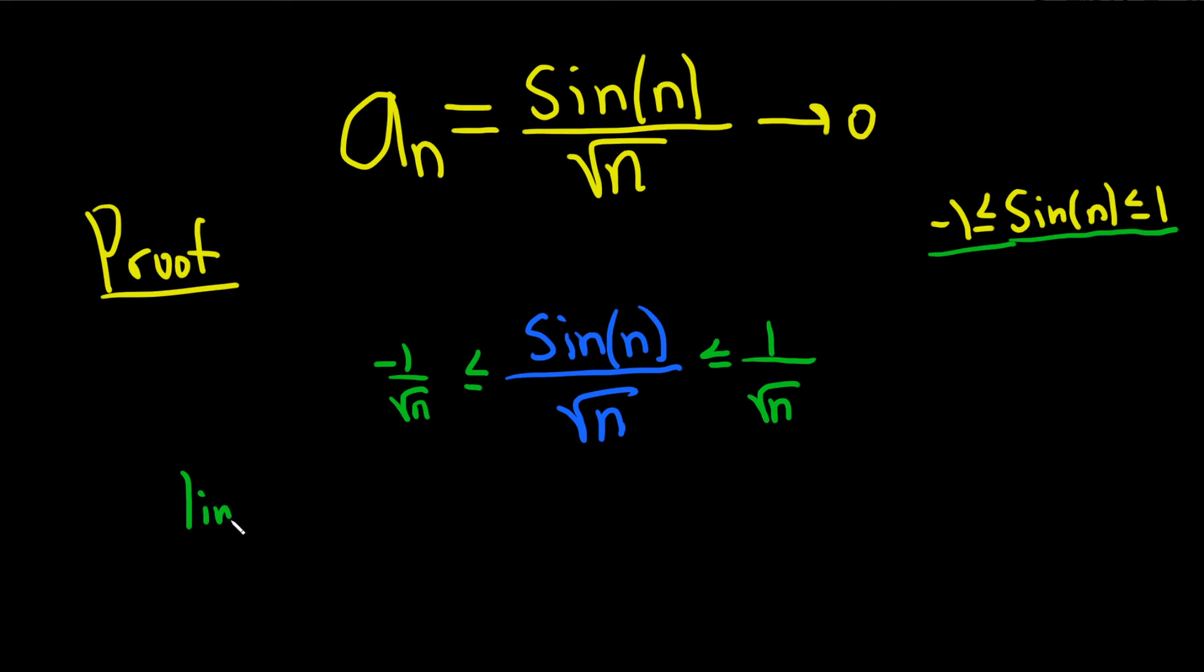The limit as n approaches infinity of 1/sqrt(n): when n gets really big, n is on the bottom and it's getting big, so this fraction gets small. This approaches zero.